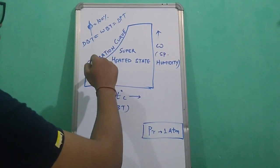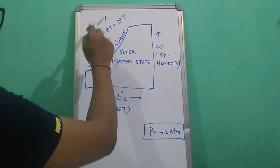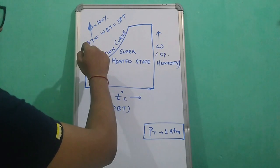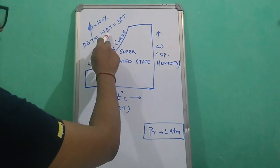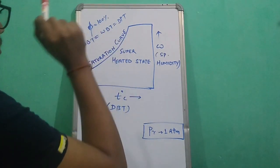At the saturation curve, relative humidity phi equals 100%. At this curve, the dry bulb temperature, wet bulb temperature, and dew point temperature are all equal.